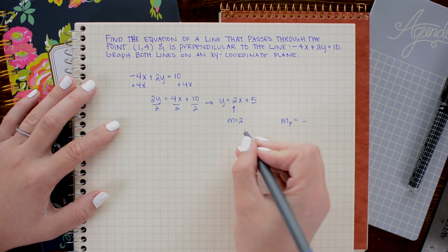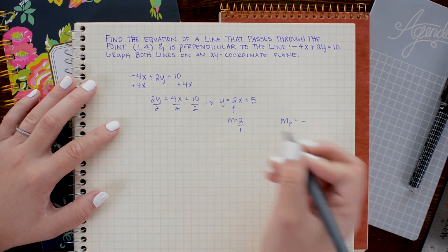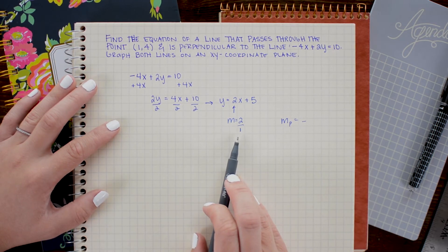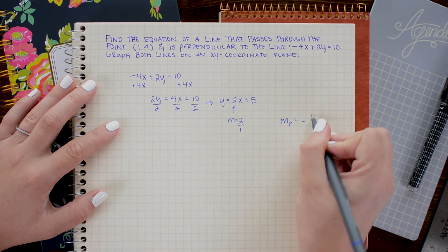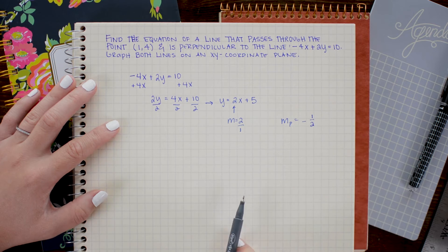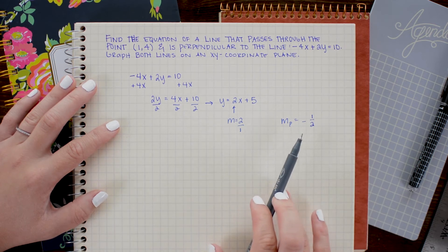When it's written as a whole number, remember that you can create a fraction out of it by writing it over top of 1. So the reciprocal, or the flipped version of this, will be one-half. That means that the slope that we want to work with with our new equation will be negative one-half.